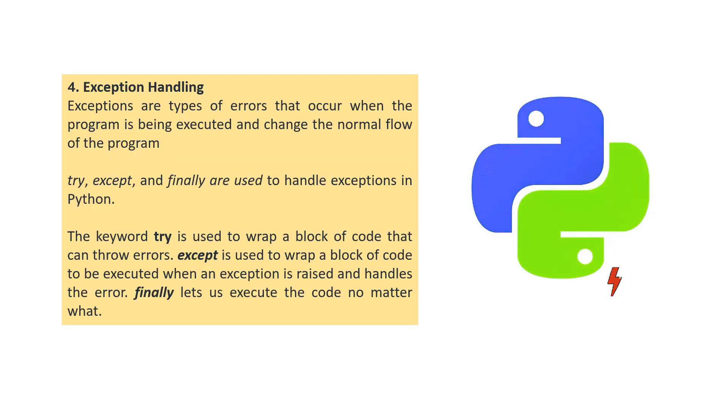Next concept is exception handling. Exceptions are types of errors that occur when the program is being executed and change the normal flow of programs. Try, except and finally are used to handle exceptions in Python. The keyword try is used to wrap a block of code that can throw errors. Except is used to wrap a block of code to be executed when an exception is raised and handles the error. Finally lets us execute the code no matter what. These are the concepts under exception handling.